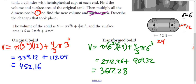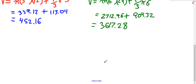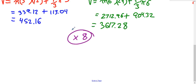Our dimensions changed by a scale factor of 2. The volume went from 452.16 to 3,617.28 — that's times 8. So 452.16 times 8 is exactly 3,617.28. The sides all increased by a factor of 2, but the volume increased by a factor of 8.